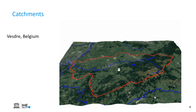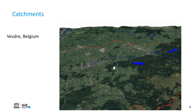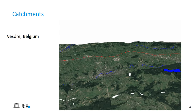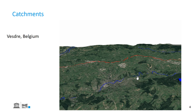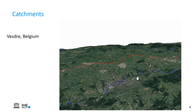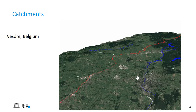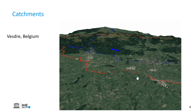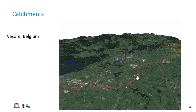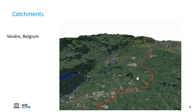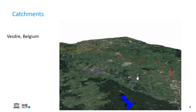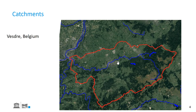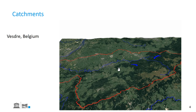Here we see a catchment. This is the Vester catchment in Belgium, and the size of a catchment depends much on the ruggedness of the area, of the elevations — here we exaggerated the elevations a bit. In British English we would call the area inside the red polygon the catchment, and we call the red line itself the watershed.